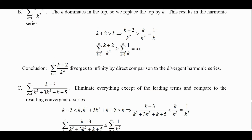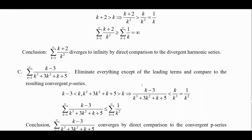For the third example, eliminate everything except the leading term and compare to the resulting convergent p-series. This is a polynomial in the numerator and denominator — the leading term dominates. Eliminate everything at the top except k, and everything at the bottom except k cubed. So k over k cubed is 1 over k squared.